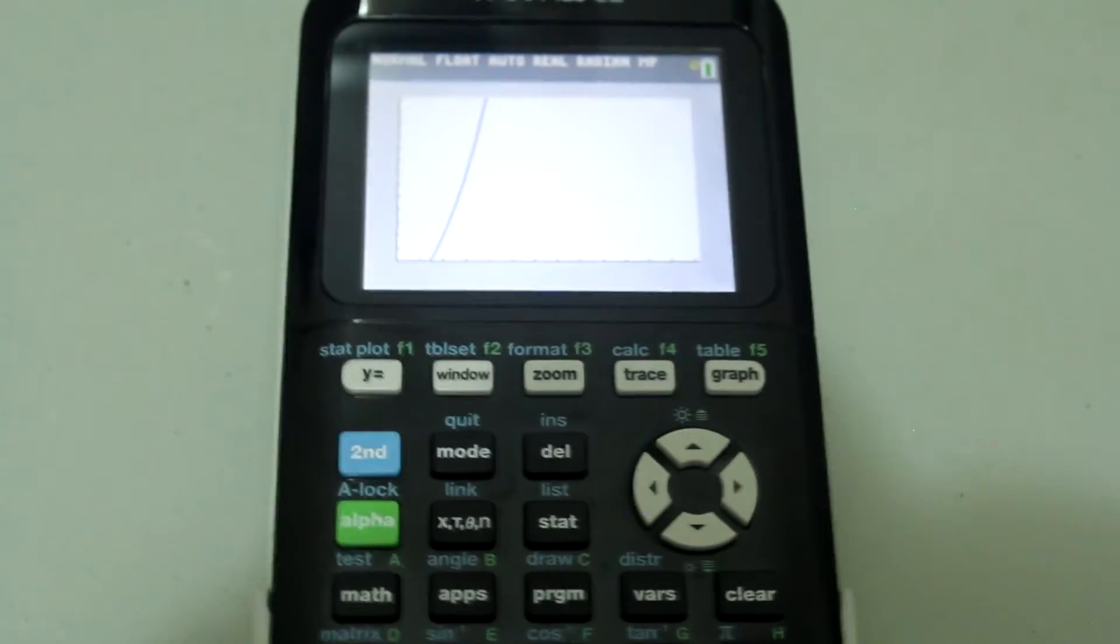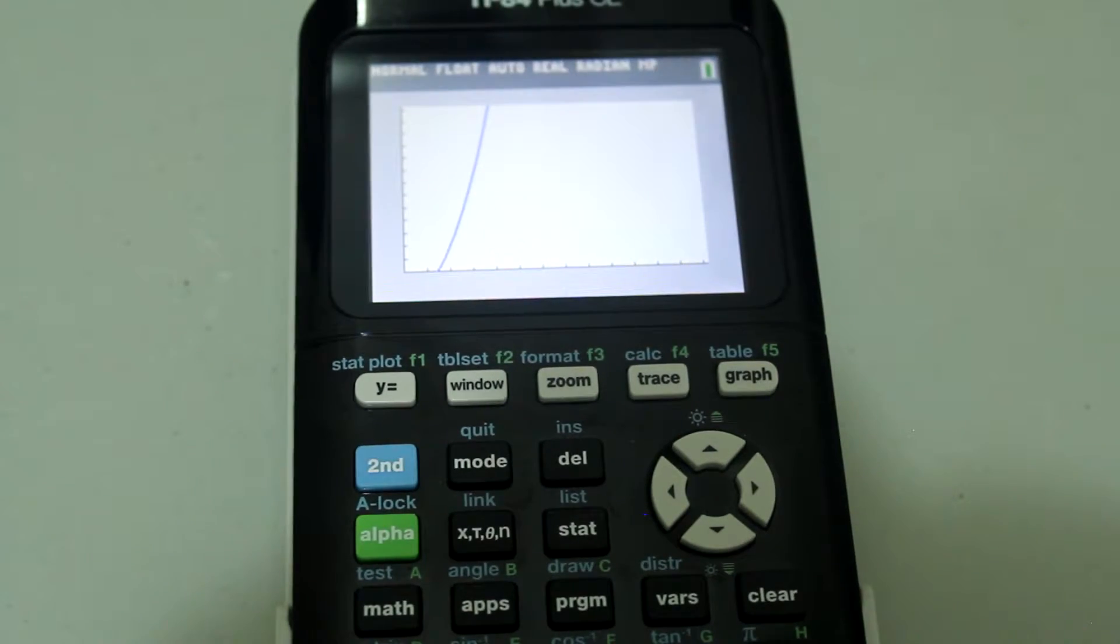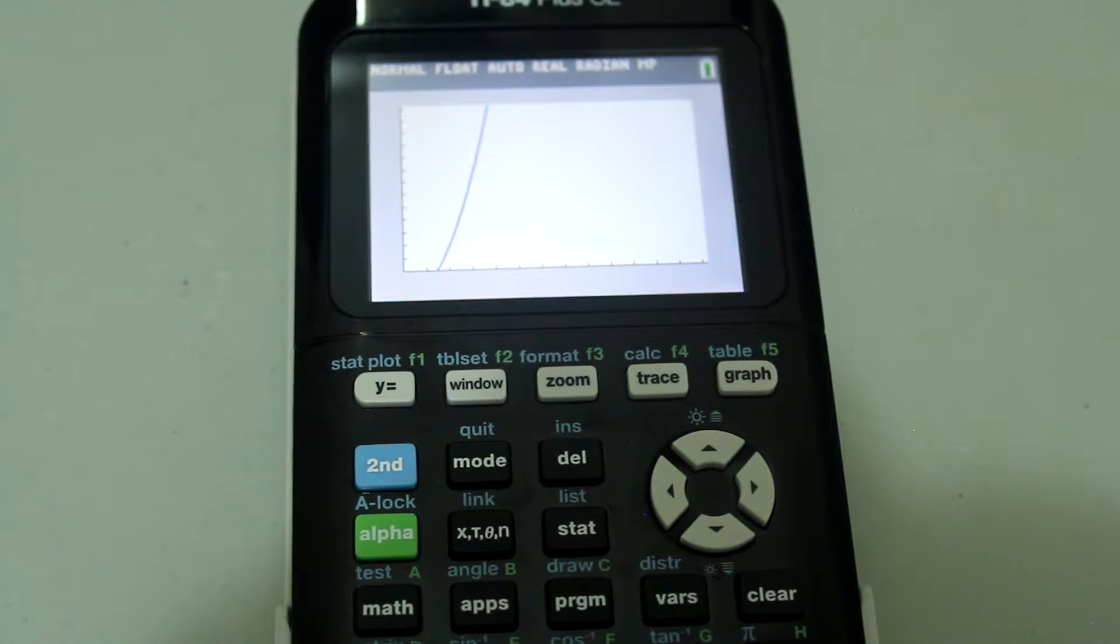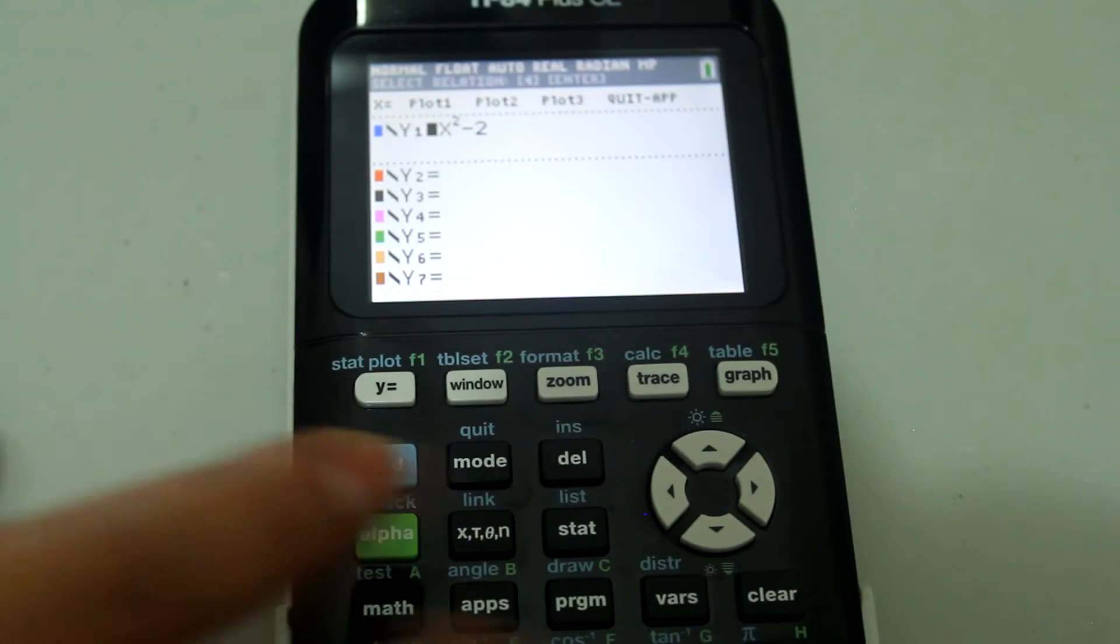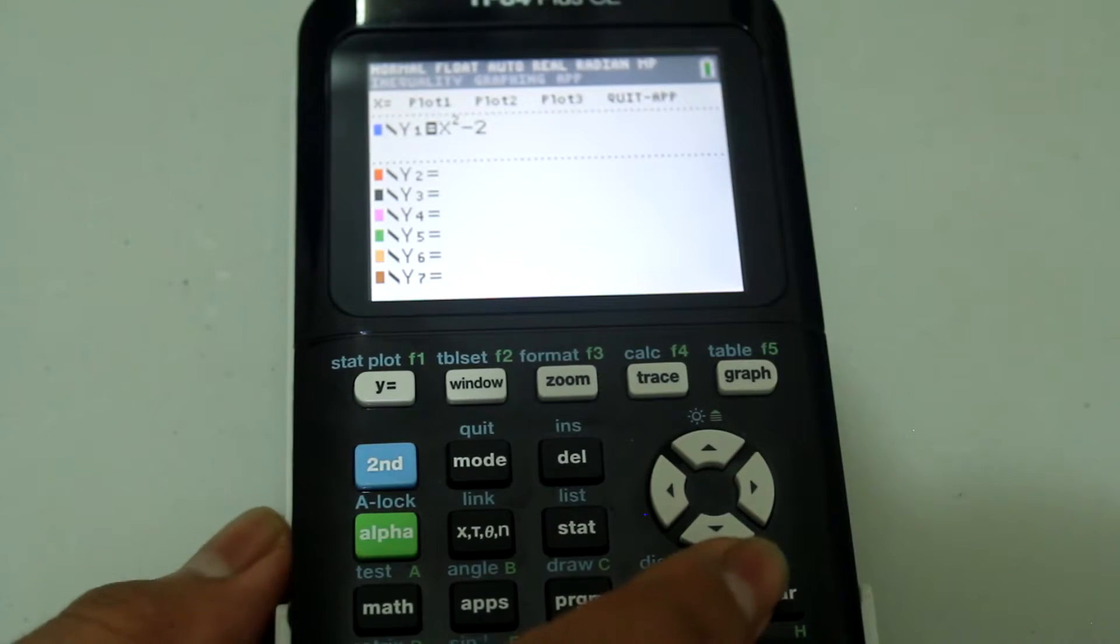you notice that now the graph appears only in quadrant 1. If you were to go back to y equals and type in a different equation,